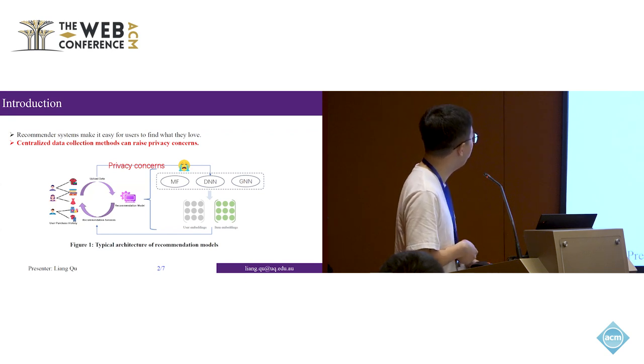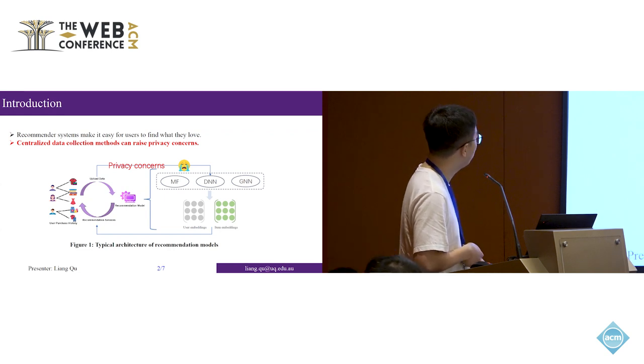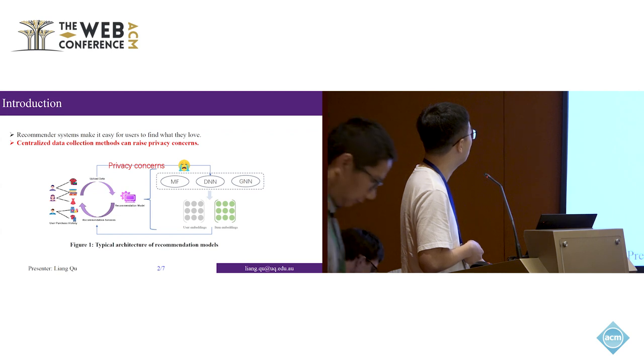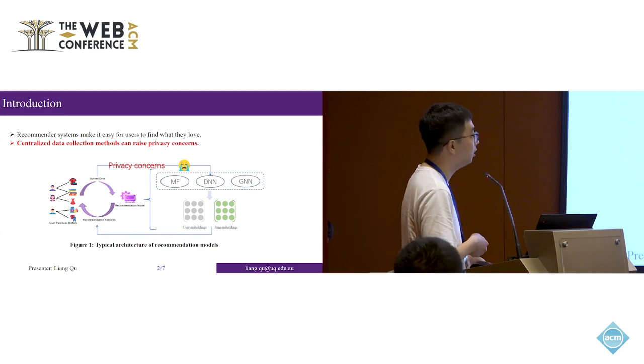In this figure, we give you a typical architecture of recommendation models. We take the recommendation model in the context of an e-commerce platform as an example, such as Amazon or Taobao. This architecture consists of two parts. The first part is on the left side, the data part, which consists of the user and item interaction data—the products that users have bought.